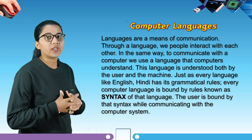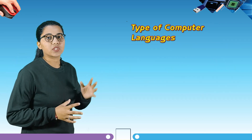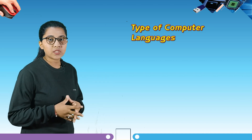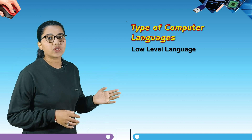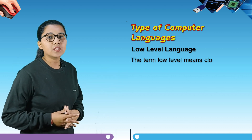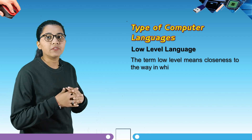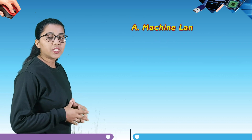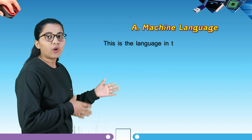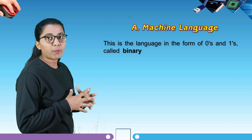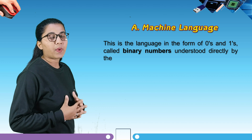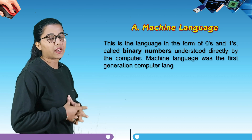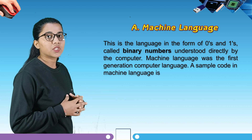Our next topic is types of computer languages. In the computer system, languages have some levels. Our first level is low level language. The term low level means close to the way in which a machine understands. Low level languages are machine languages — this is the language in the form of zeros and ones, called binary numbers, understood directly by the computer. Machine language was the first generation computer language.